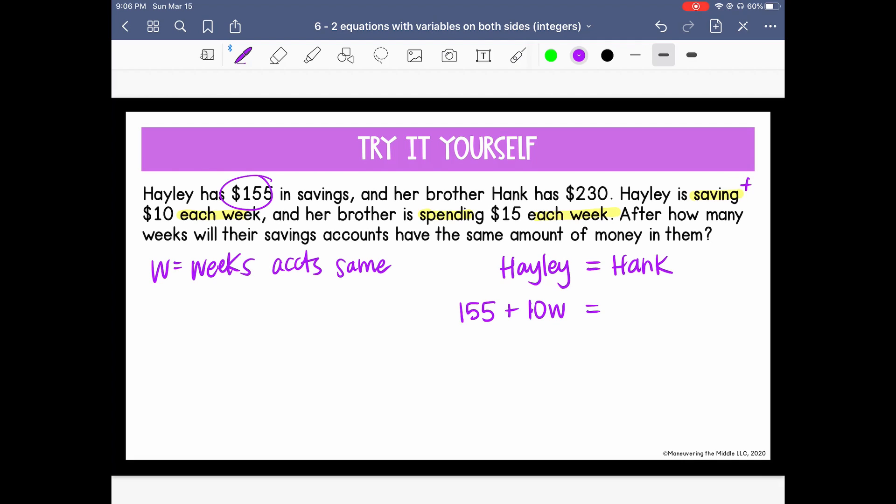Hank, on the other hand, has $230 and he's spending. So instead of adding, he's subtracting $15 each week. So now we have our equation and we just need to solve.